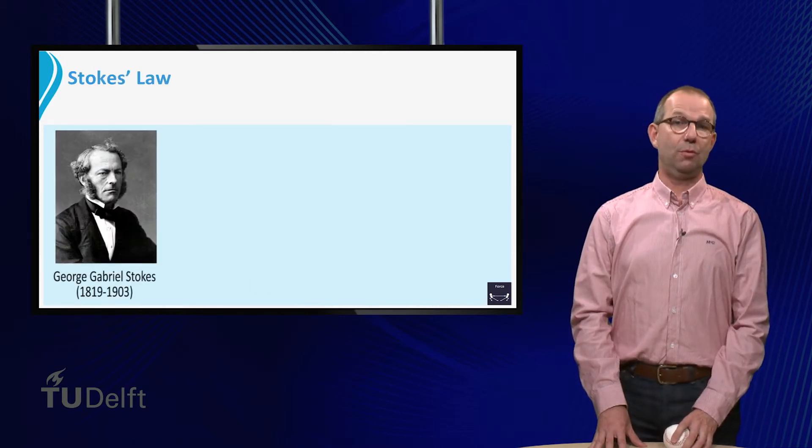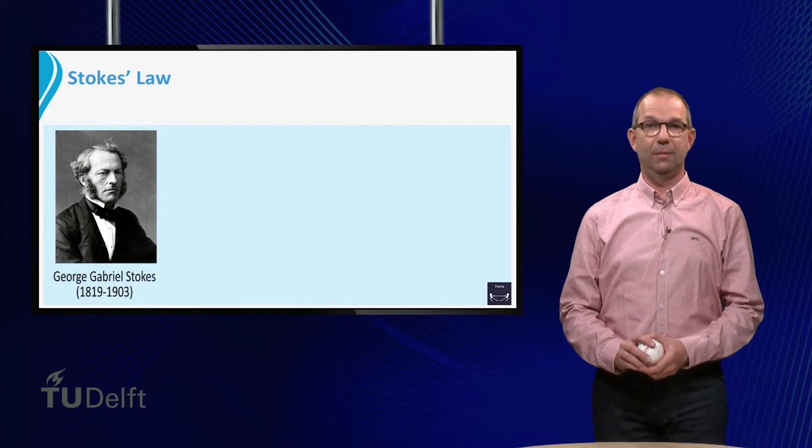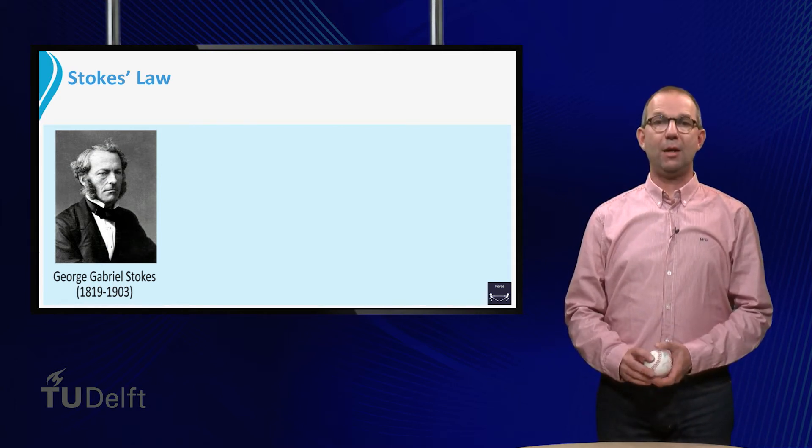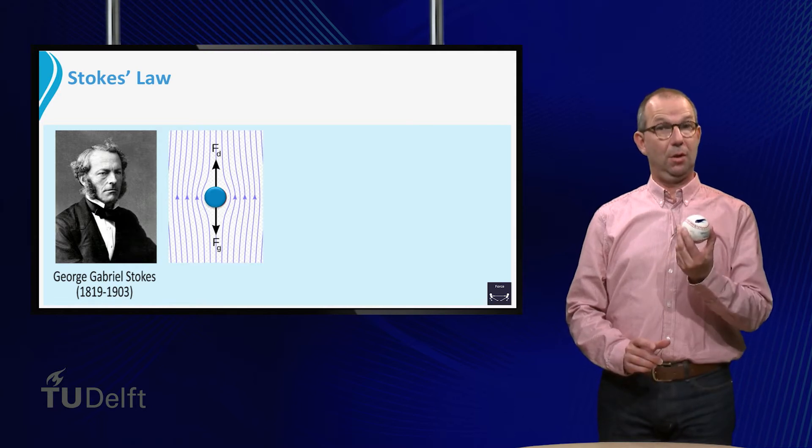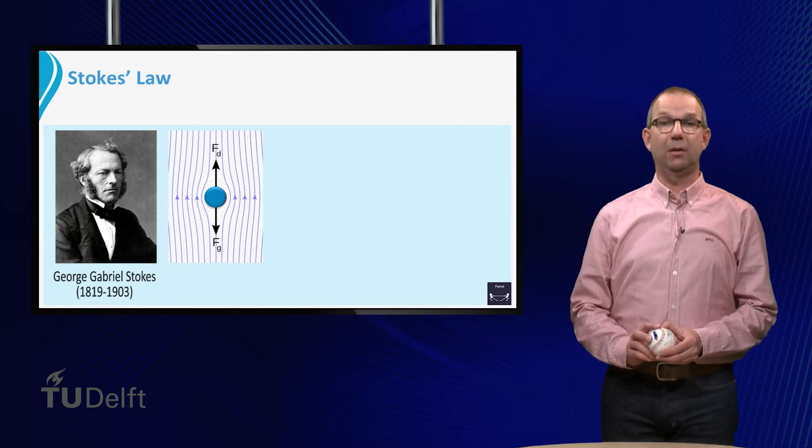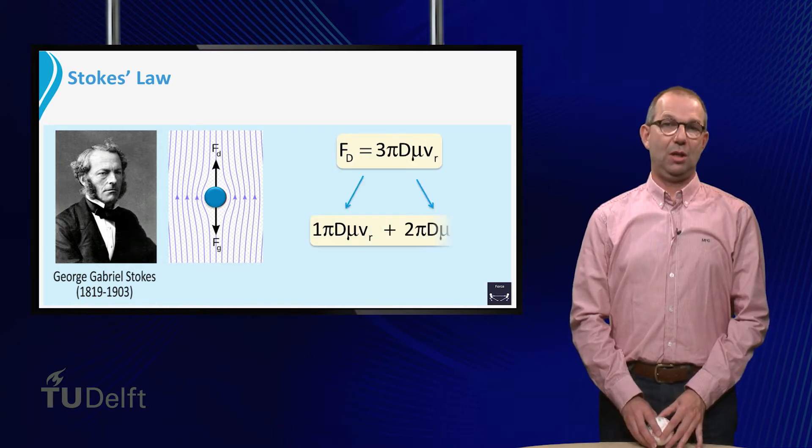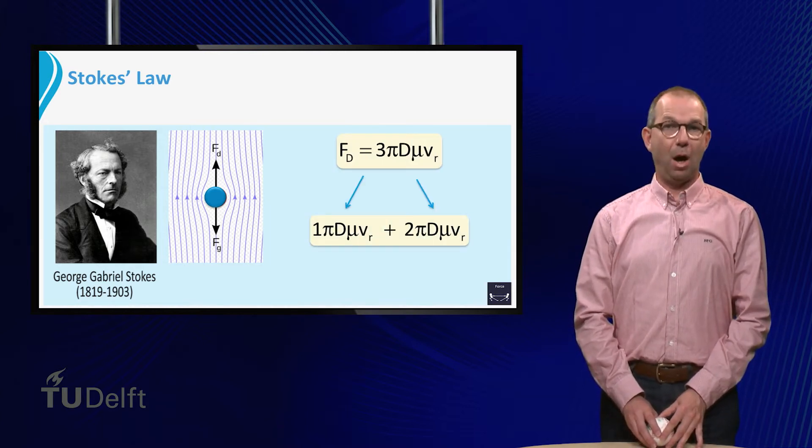It was Gabriel Stokes who found an analytic solution that is now known as Stokes law. It gives the drag force on a sphere for low Reynolds numbers smaller than 1. It reads as the drag force is equal to 3πdμv.